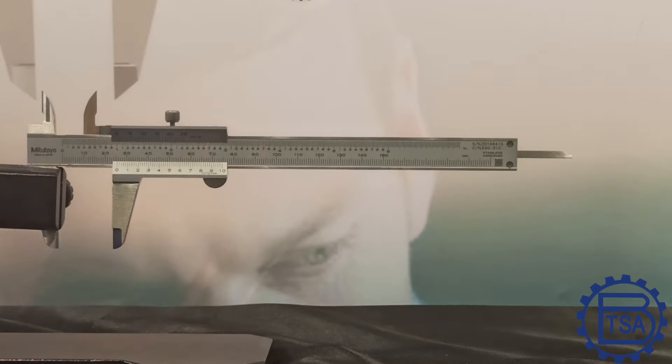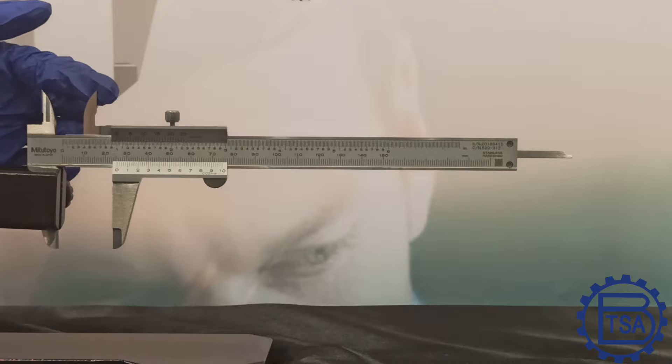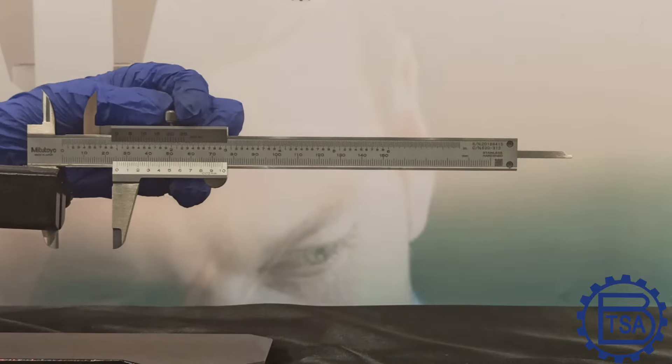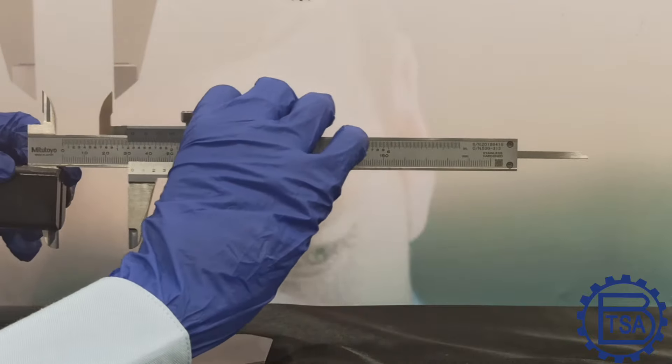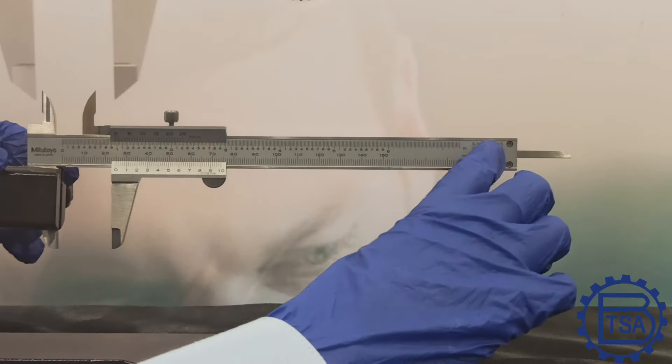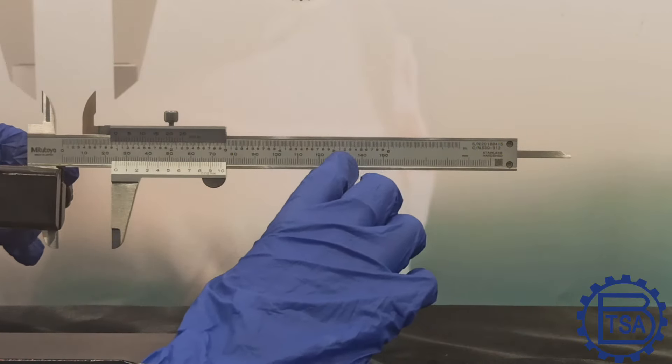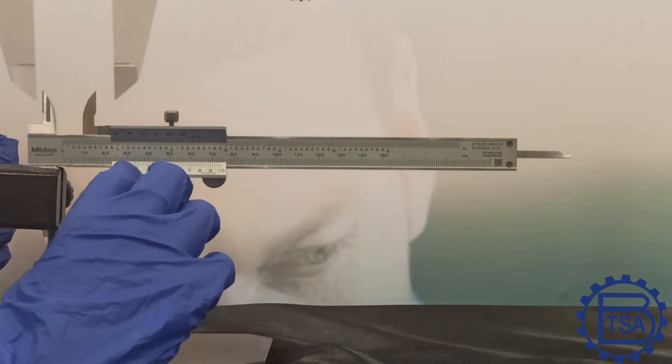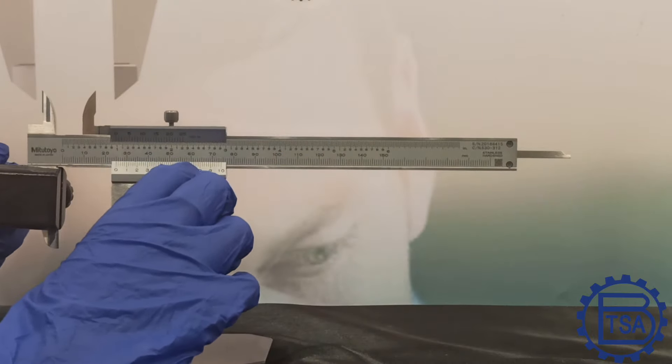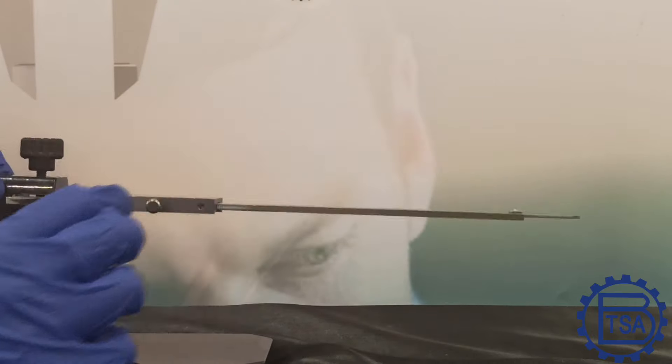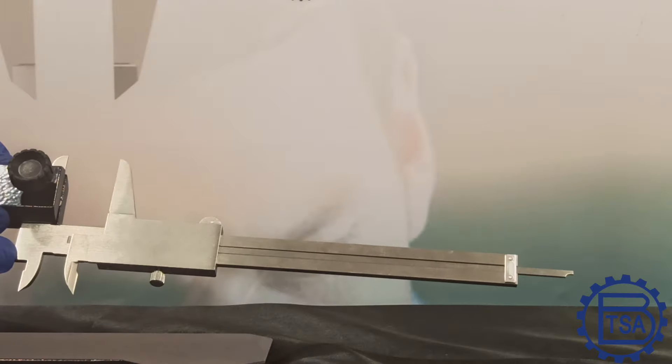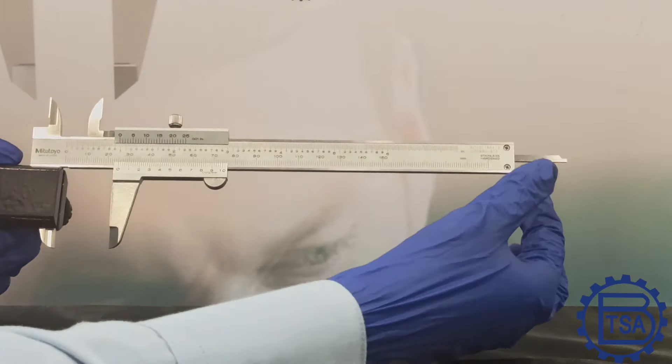These are the outer jaws, the inside jaws, locking screw, thumb wheel, beam, main scale, vernier scale, step measuring phases and depth bar.